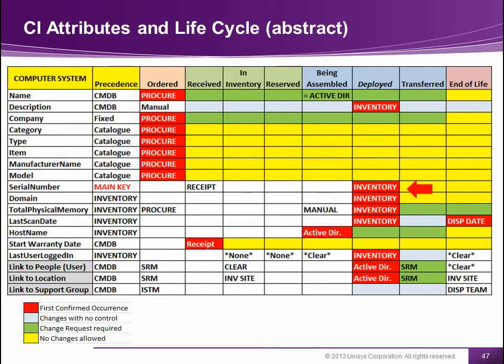For example, the domain name in Windows is only known the first time you have deployed the machine, and it's given by the inventory tool. Then after this, it should normally not change. Normally.